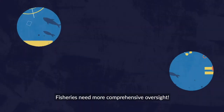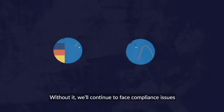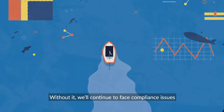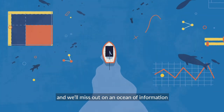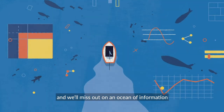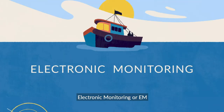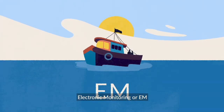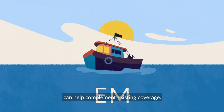Fisheries need more comprehensive oversight. Without it, we'll continue to face compliance issues and we'll miss out on an ocean of information about our fisheries. Electronic monitoring, or EM, can help complement existing coverage.